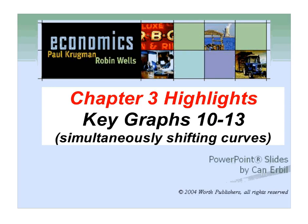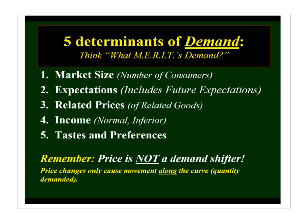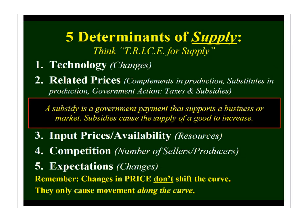Welcome back to the highlights for chapter three. This is covering key graphs 10 through 13. We're going to look at what merits demand and think tries for supply. Now we're going to take a look at simultaneously shifting curves, as opposed to just demand curve shifts or supply curve shifts. If you need a refresher on what merits demand or think tries for supply, go back to the first video covering key graphs five through nine.